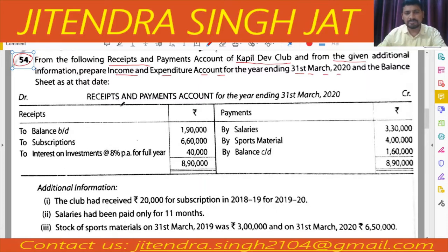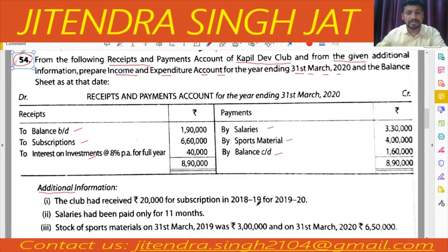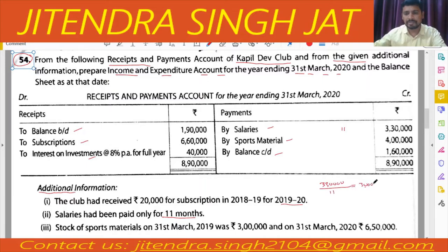The receipt and payment account is given here. Salaries is an expense, sports material expense, and this is the closing cash balance. The opening cash balance, subscription, and interest on investment are the two incomes given. Some additional information is also given: the club had received 20,000 for subscription in 2018-19 for 2019-20. Salaries had been paid only for 11 months — so 3,30,000 is for 11 months, meaning one month salary of 30,000 is outstanding.